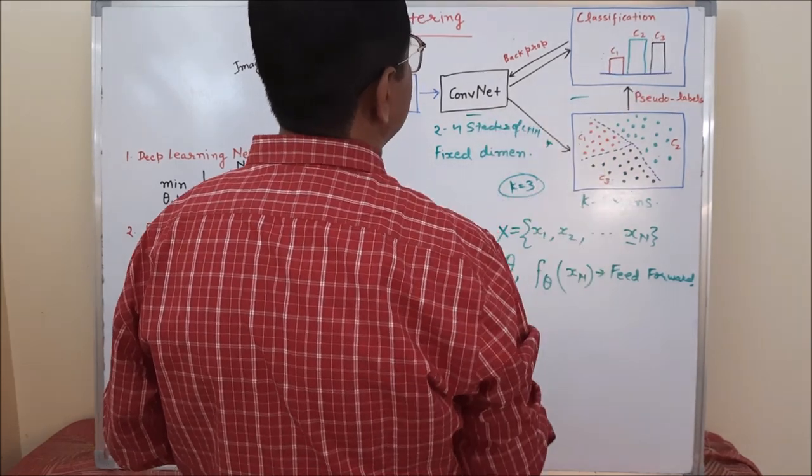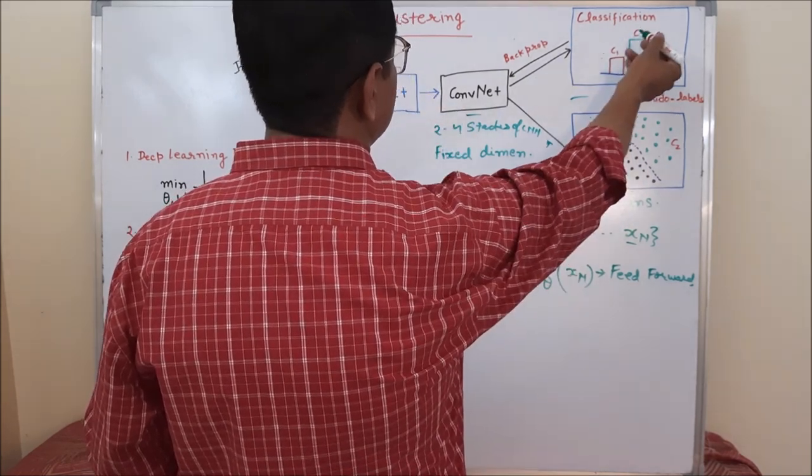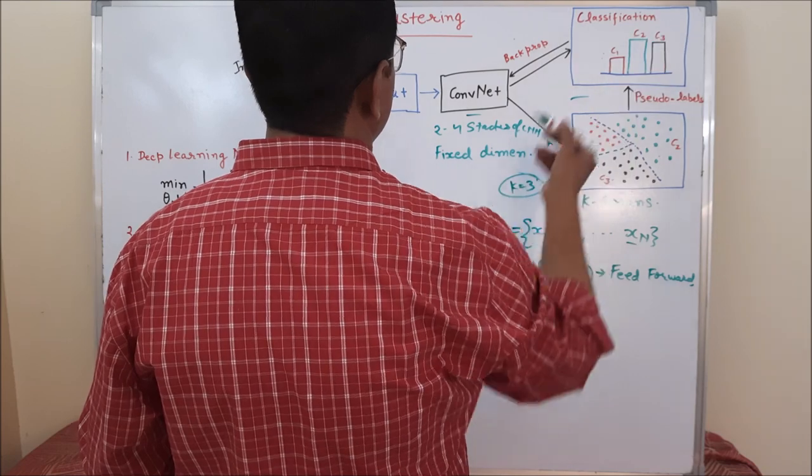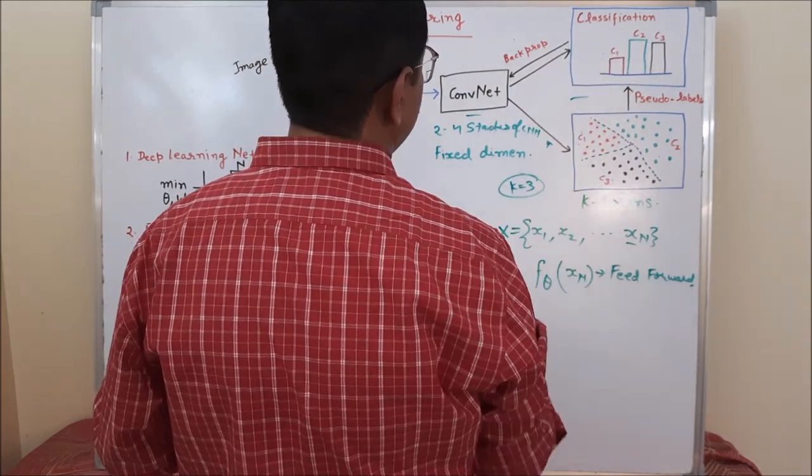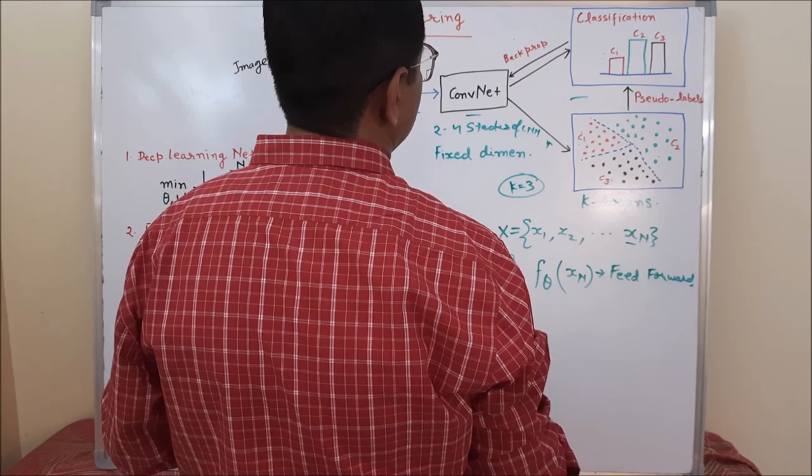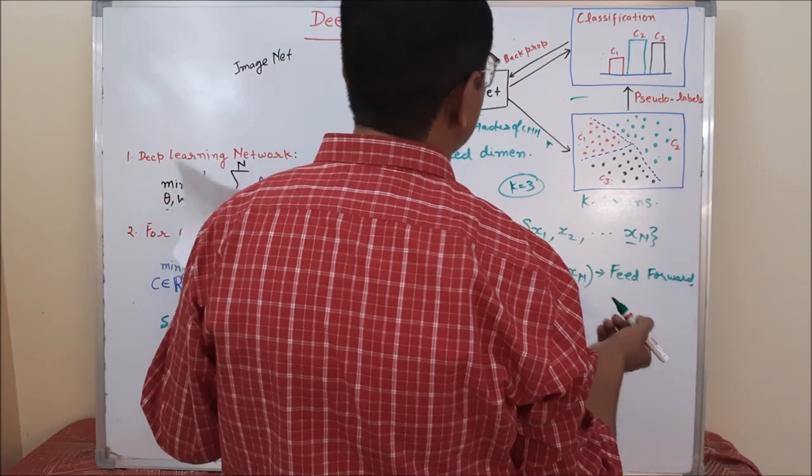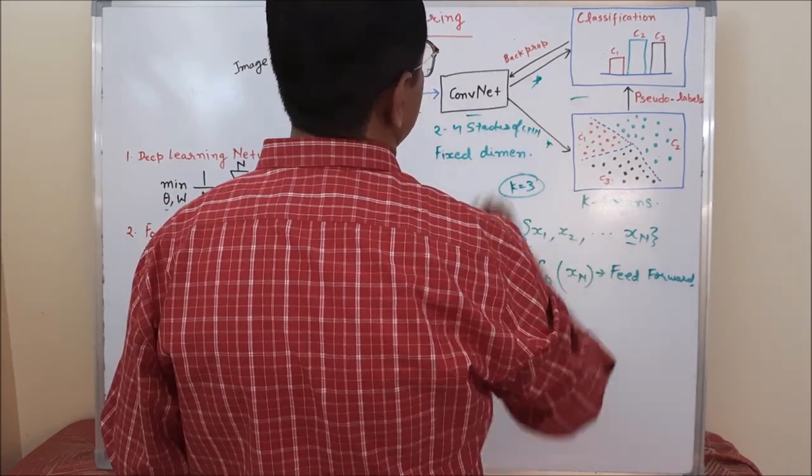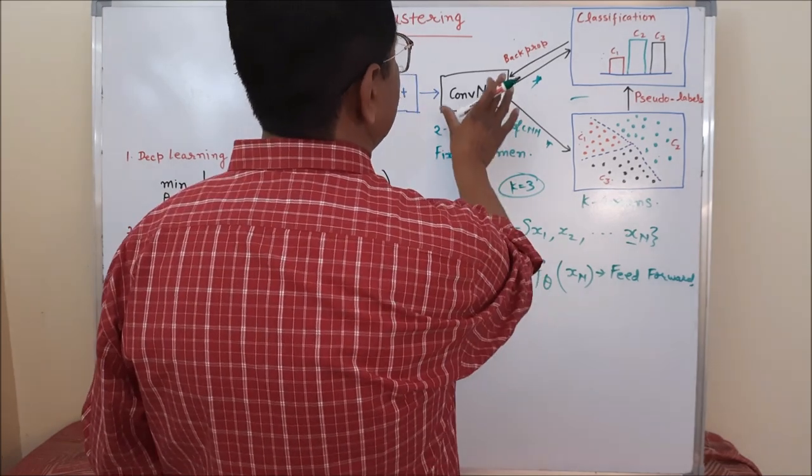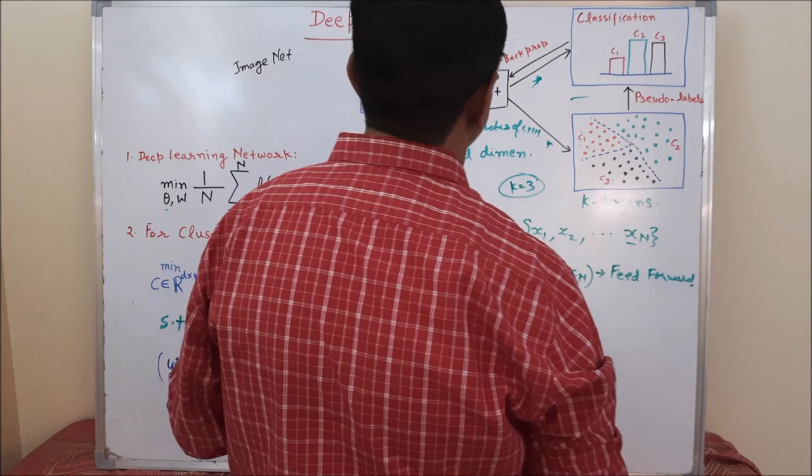Because we already have level training data, means training input labels, pseudo labels for each of the classes. So we will start training this, apply the back propagation. So when we apply the back propagation mini batch gradient descent algorithm, then what will happen? We need another cost function so that we can probably get the best learning.